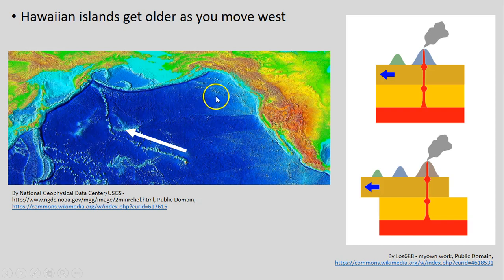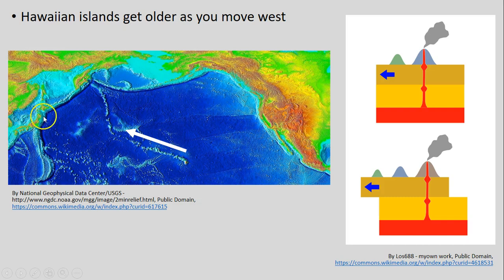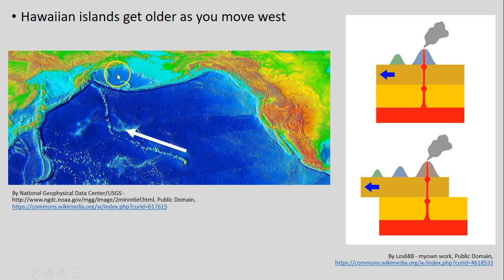This is also a good image to show our bathymetry, as we talked about in the prior lecture video on tectonic plates. You can also see the expression of a deep ocean trench that runs along here and up into the Aleutian Islands, the Japanese islands — a very deep ocean trench due to the Pacific Ocean plate and its subduction under various other plates around it.